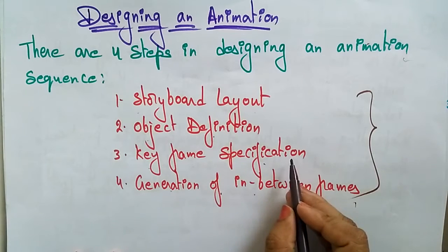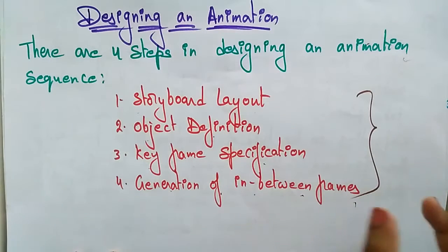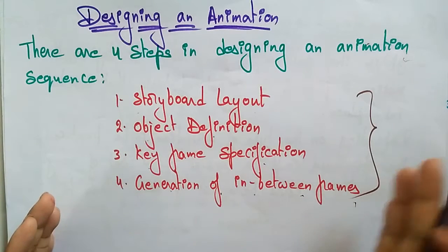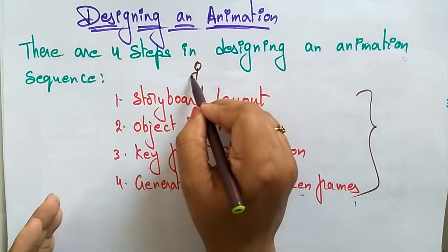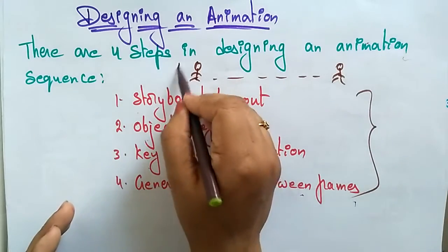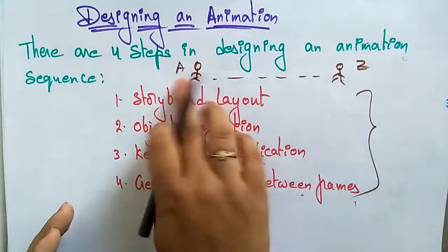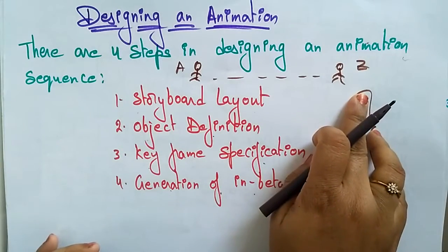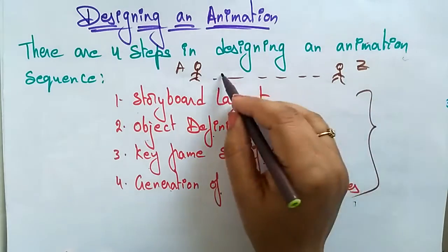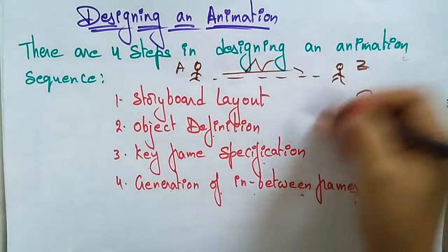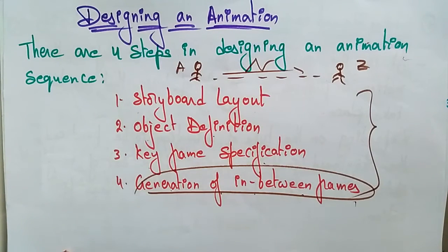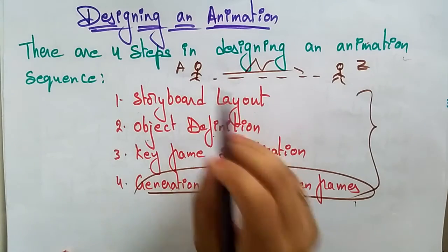Next is keyframe specification — what is the starting point and what is the ending point. For example, a person walking has to move from position A to position Z. That starting and ending is the keyframe specification. In between, how you move — whether in a straight line, up and down, or down to up — that is the generation of in-between frames.